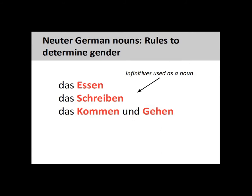All infinitive verbs used as a noun — which requires the first letter of the verb to be capitalized — will be neuter. For example, Essen meaning food, Schreiben meaning document or writing, and das Kommen und Gehen, the act of coming and going, are all neuter.